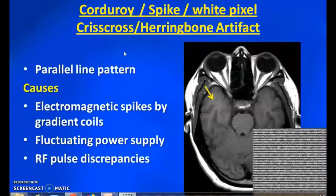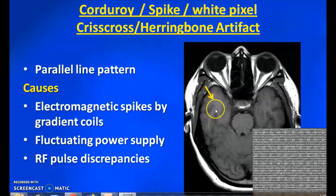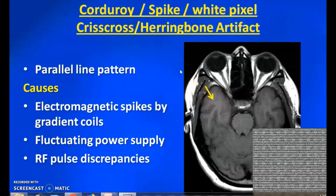Corduroy artifacts are spike artifacts appearing as parallel lines inside the anatomical part. These are mainly caused by electromagnetic spikes from the gradient coils and switching power supplies. Sometimes faulty coils also cause this type of artifact.